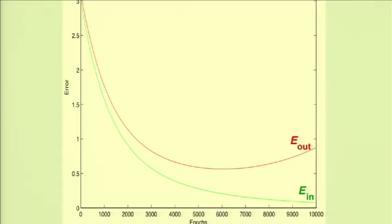In this experiment, you've set aside a test set not used in training. You evaluate what happens out-of-sample—not only at the end but as you go—to see whether you're making progress out-of-sample as you train. You're definitely making progress in-sample. You plot the out-of-sample error estimated by the test set, and this is what you get.